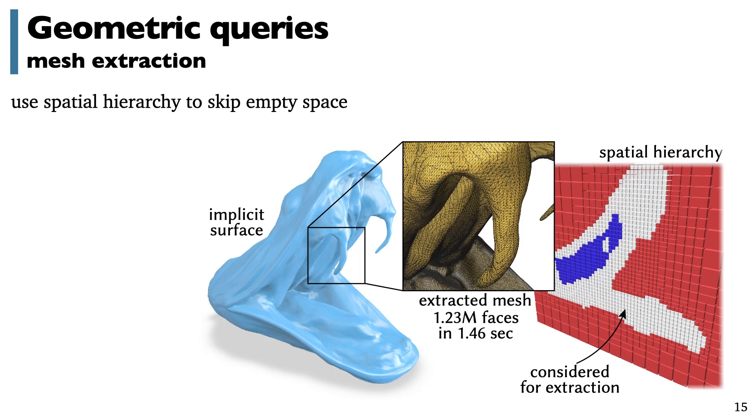Similarly, we can also perform fast mesh extraction by running the marching cube algorithm only on the leaves of the KD tree and skipping any nodes which we know to be empty. Once again, this gives order of magnitude speed up at high resolution while still provably producing the exact same result as running dense marching cubes.